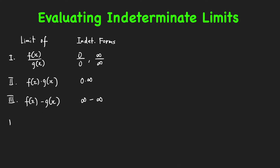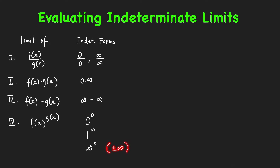The last case is when we evaluate limits of functions of the form f(x) raised to g(x). We have three indeterminate forms here: 0 raised to 0, 1 to infinity, and infinity to 0. The second form includes limits of the form 1 raised to plus or minus infinity, and the third includes cases where f(x) tends to plus or minus infinity and g(x) tends to 0.